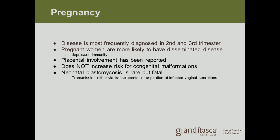Pregnancy is another important group. Blastomycosis is most frequently diagnosed in the second and third trimester, and pregnant women are more likely to have disseminated disease — such as in the skin or brain — due to their depressed immunity. Placental involvement has been reported, but it does not increase the risk for congenital malformations. Neonatal blastomycosis is rare but can be fatal, transmitted either transplacentally or by aspiration of infected vaginal secretions during delivery.